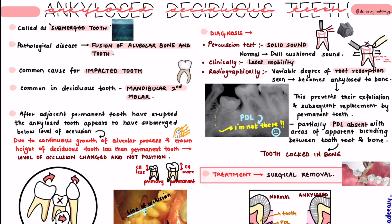Welcome back. The topic we are going to talk about today is ankylosed deciduous teeth, also known as submerged tooth. Ankylosis in medical terms means stiffness, or fusion/fixation of two hard structures. In ankylosed deciduous teeth, there is fusion of the alveolar bone with the tooth — that is why it is called an ankylosed tooth. It is a pathological condition where you see fusion of the alveolar bone with the tooth.